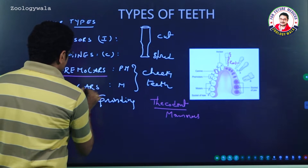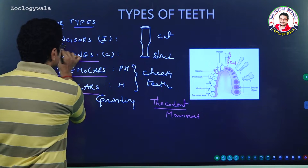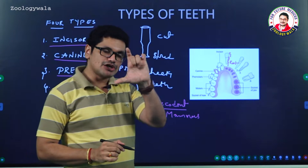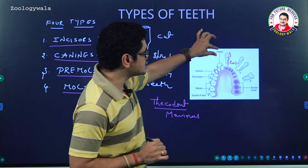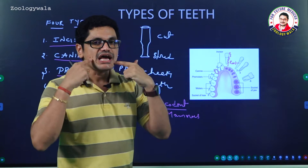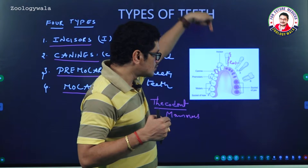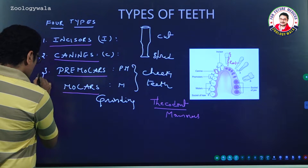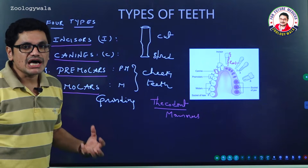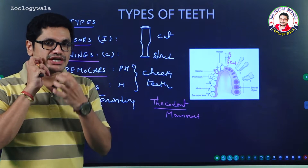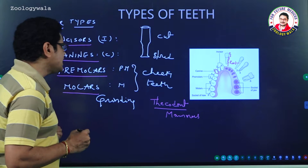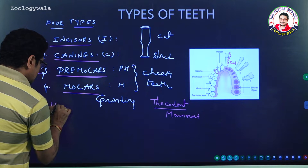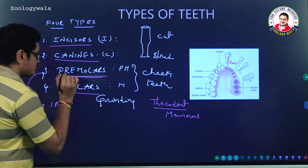Among premolars, molars, canines, and incisors, a typical tooth contains three portions: the visible portion is the crown, followed by the neck, and then the root, which completely fixes into the sockets of the jaw bone. Premolars are teeth useful for chewing. Generally, a single root is present for premolars.